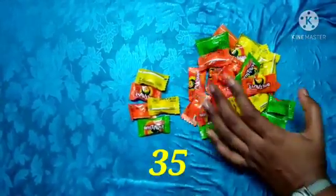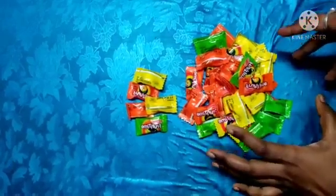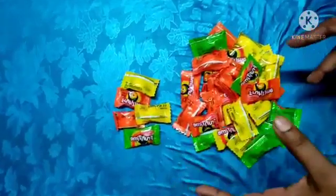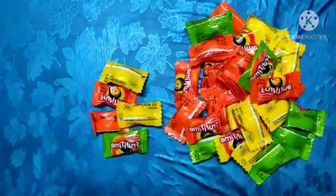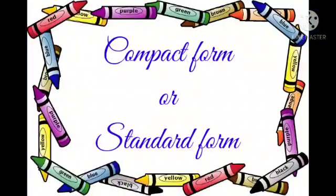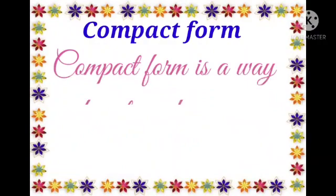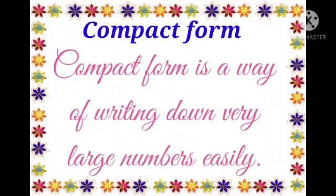Today we are going to learn about compact form, which means changing a larger number into an easy-to-read number. Let us see the definition of compact form. Compact form is also known as standard form. Compact form is a way of writing down very large numbers easily.